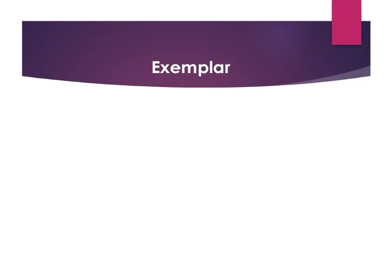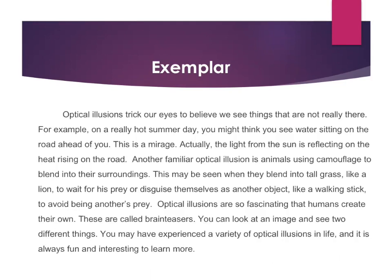Optical illusions trick our eyes to believe we see things that are not really there. For example, on a really hot summer day, you might think you see water sitting on the road ahead of you — this is a mirage. Actually, the light from the sun is reflecting on the heat rising on the road. Another familiar optical illusion is animals using camouflage to blend into their surroundings — blending into tall grass like a lion to wait for his prey, or disguising themselves as another object like a walking stick to avoid being another's prey. Optical illusions are so fascinating that humans create their own — these are called brain teasers. You can look at an image and see two different things. You may have experienced a variety of optical illusions in life, and it is always fun and interesting to learn more.